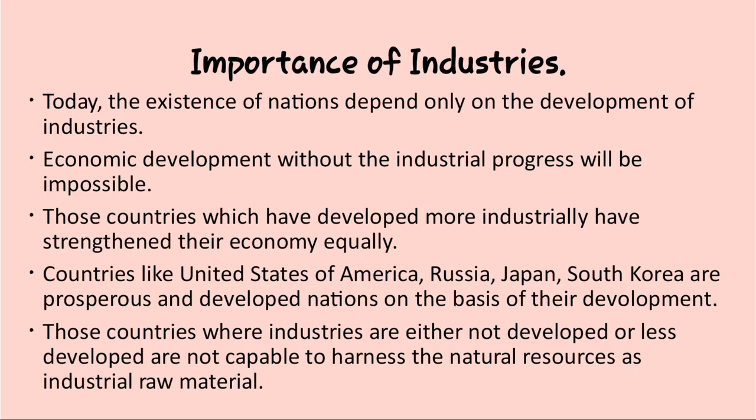Today, the existence of nations depends only on the development of industries. Where industries are more, there are more exports and more profits. Where industries are less, there is less development. Economic development without industrial progress is impossible. Those countries which have developed more industrially have strengthened their economy equally. For example, countries like the United States of America, Russia, Japan, and South Korea are prosperous and developed nations on the basis of their industrial development. Those countries where industries are not developed or less developed are not capable of harnessing their natural resources as industrial raw material.